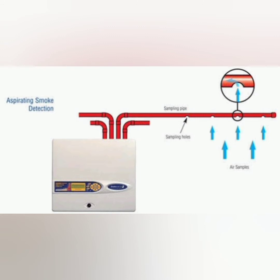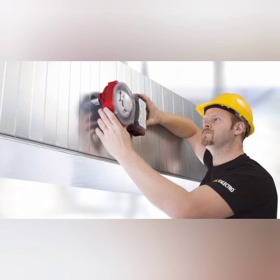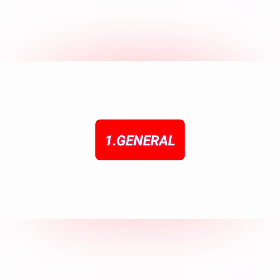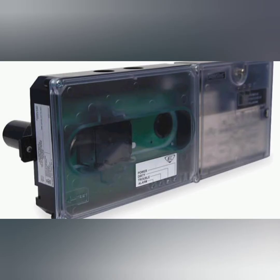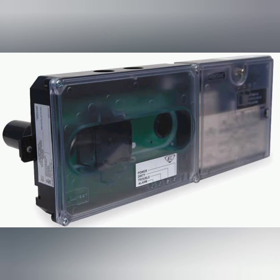Next in the list are duct detectors. For duct detectors we have two things to inspect: general and sampling tube. For general, we need to make the initial acceptance test, and the periodic frequency is semi-annual. The method for general visual inspection of duct detectors is to verify that the detector is rigidly mounted, and confirm that no penetrations in the air duct exist in the vicinity of the detector.